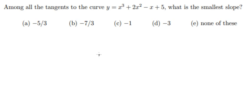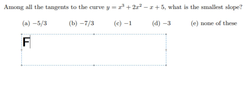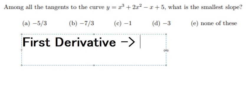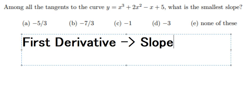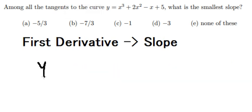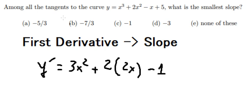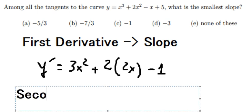First we need to do the first derivative because we can find the slope. First derivative of x³ is 3x². First derivative of 2x² is 4x, and we have negative 1. Now we do the second derivative.